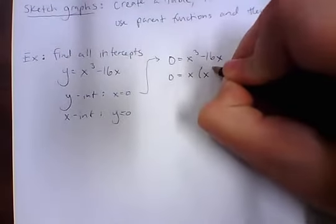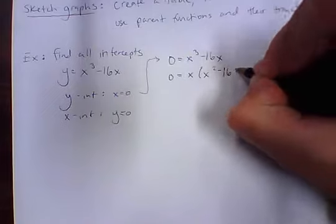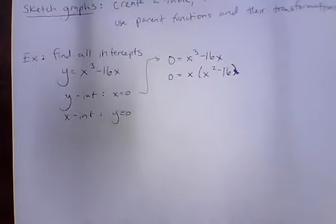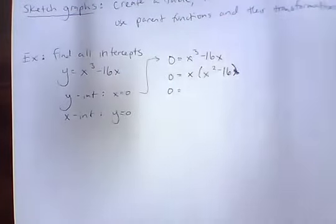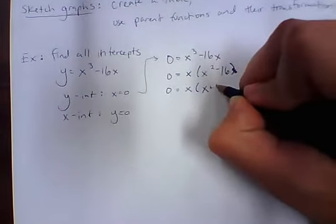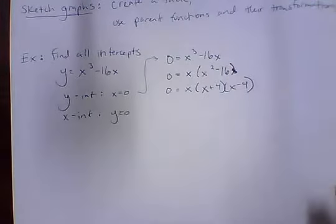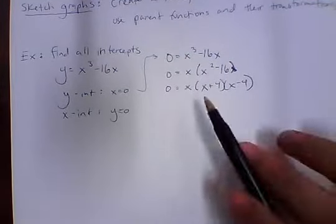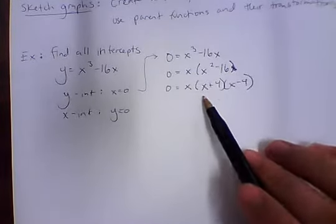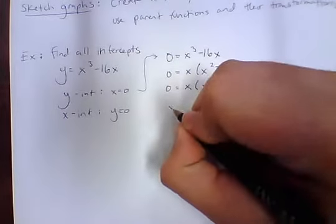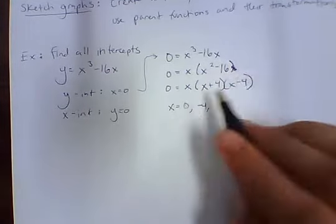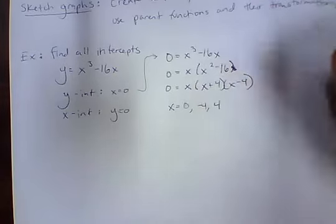To find the x-intercepts, we set y equals 0 and get x cubed minus 16x equals 0. We factor out an x, leaving x times (x squared minus 16). Using perfect squares factoring, we get x(x + 4)(x − 4). Applying the zero product property and setting each factor equal to 0, we find x equals 0, x equals negative 4, and x equals positive 4.